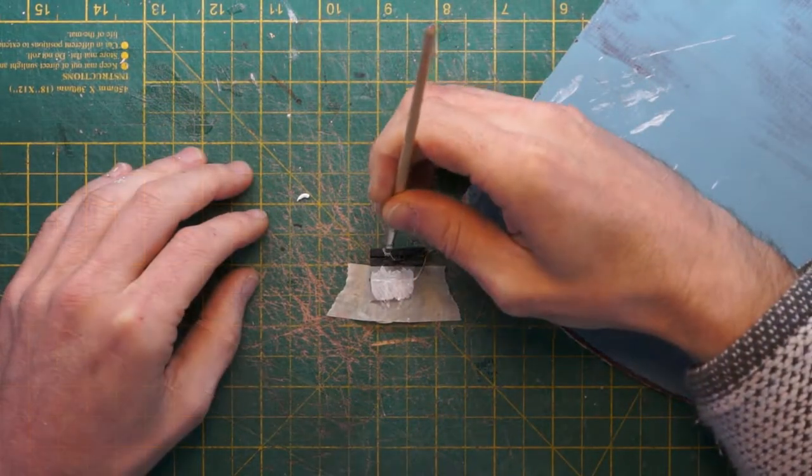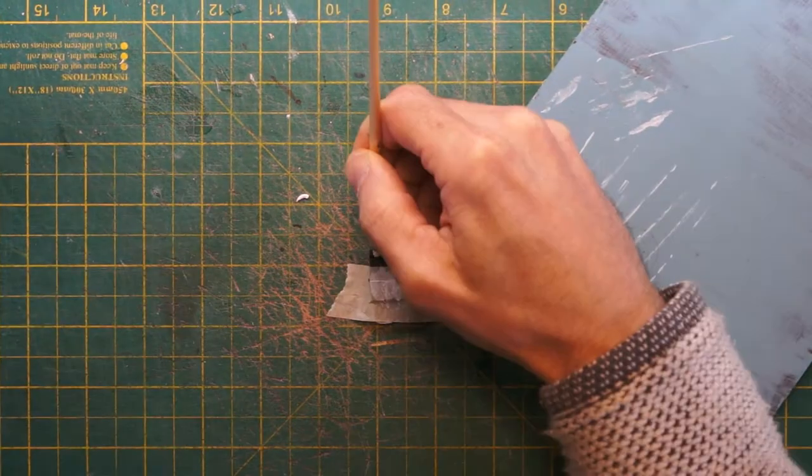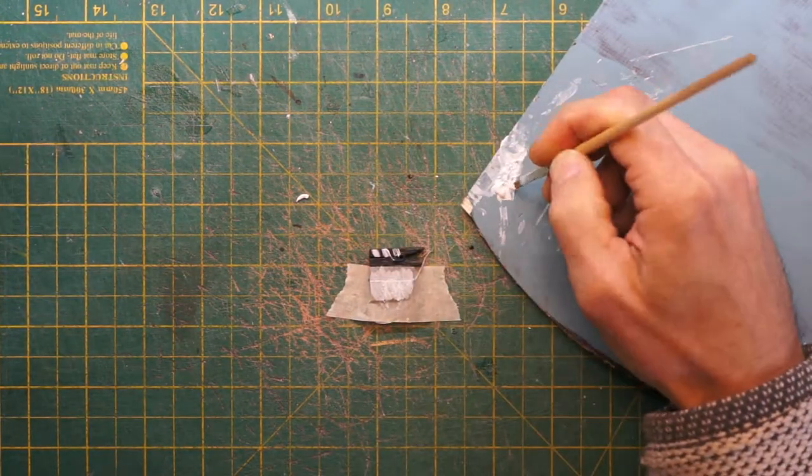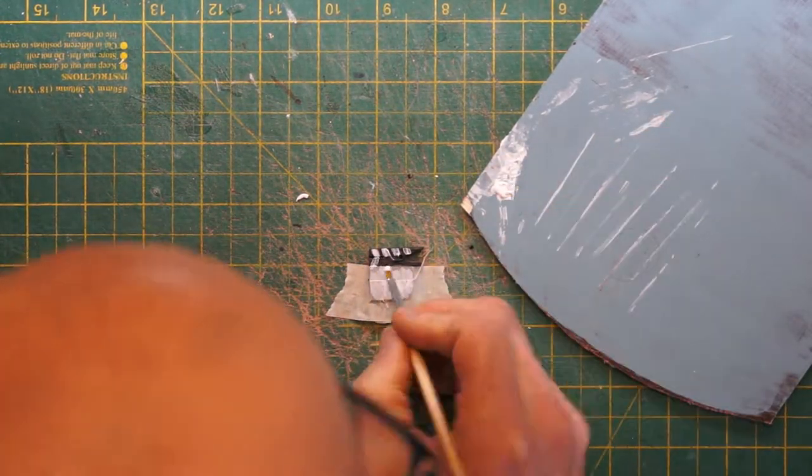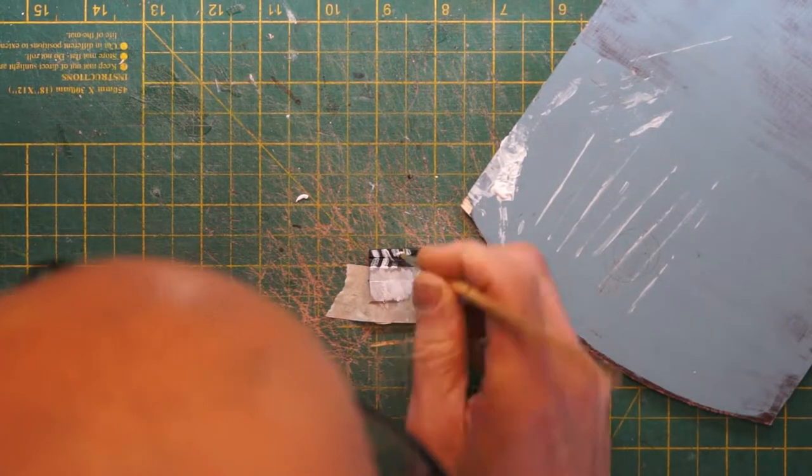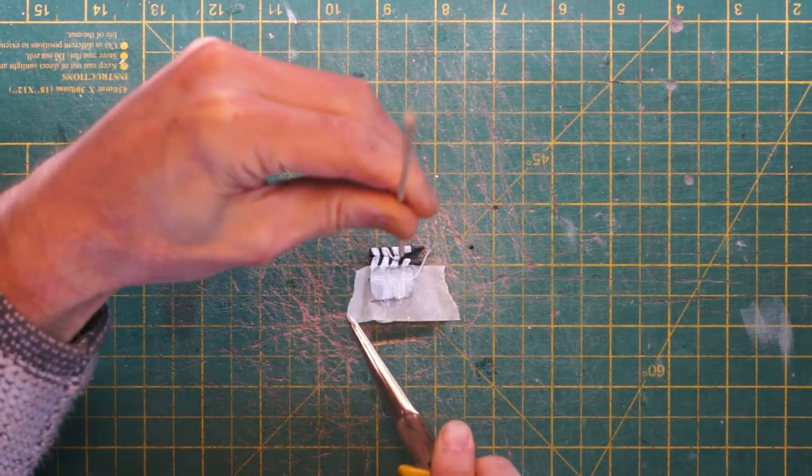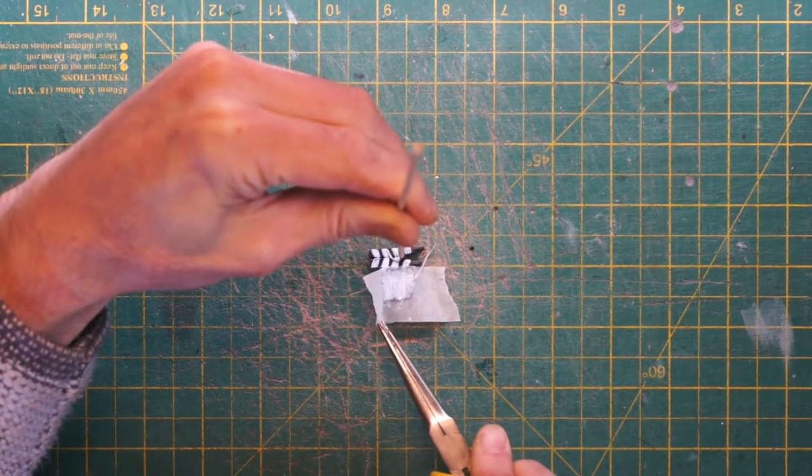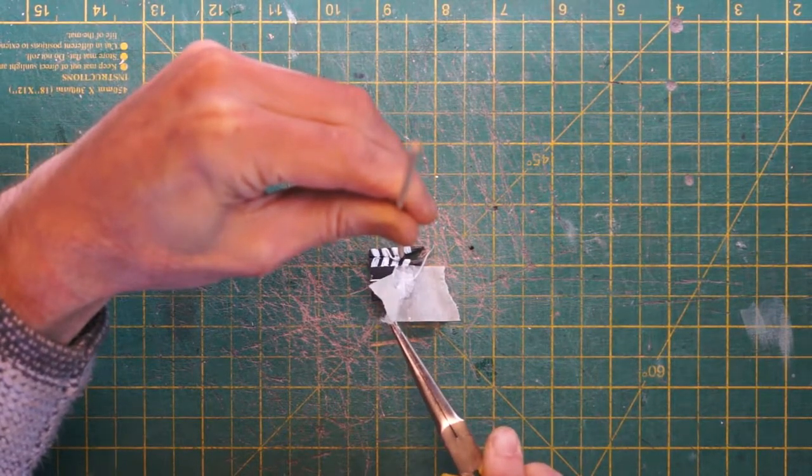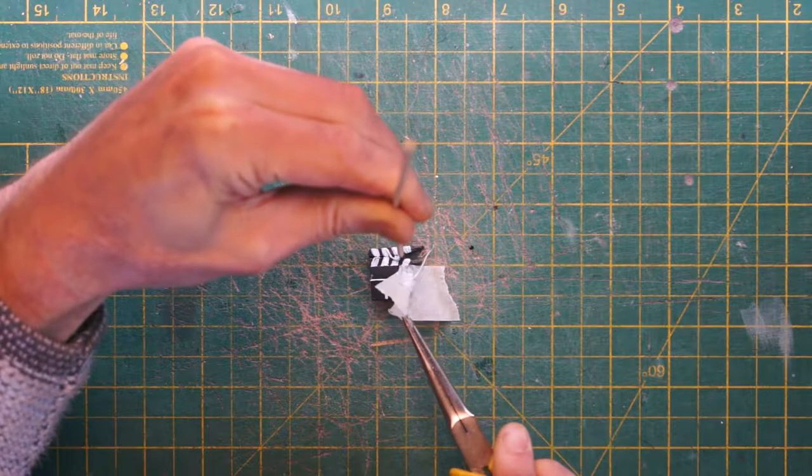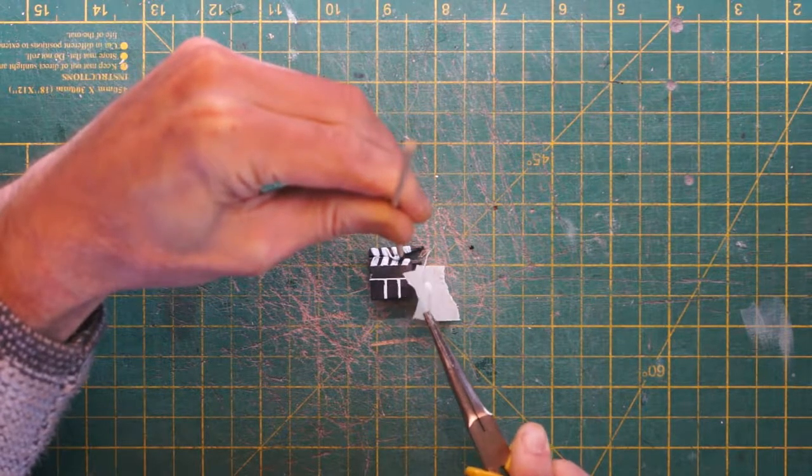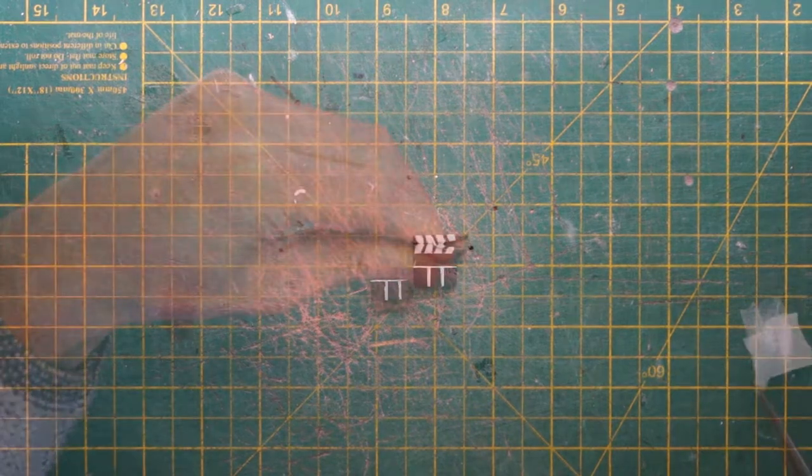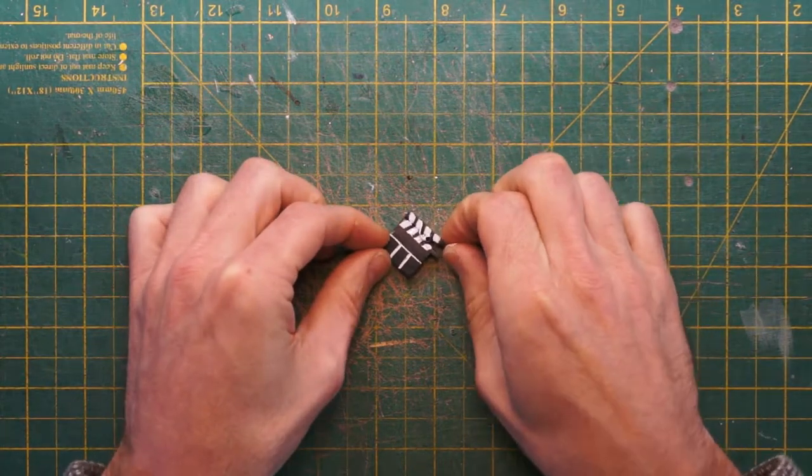Now the slightly tricky bit for me is the black and white sections across the top. Because this now requires a bit of hand painting and my hands aren't the steadiest in the world. So I have no idea how well this is going to come off. There we go. And there it is. Our little clapper board.